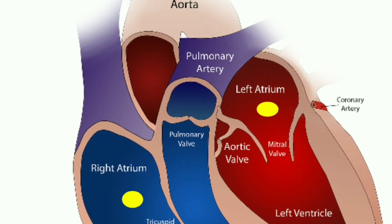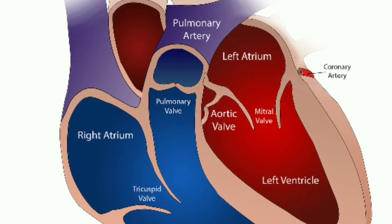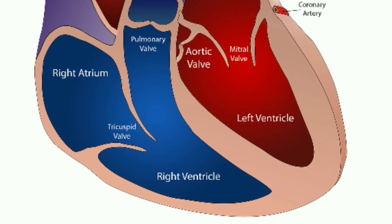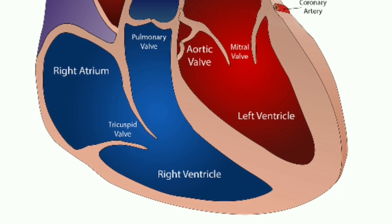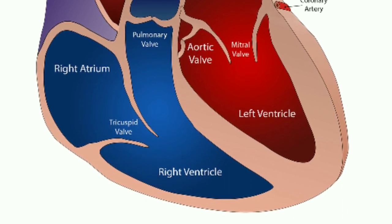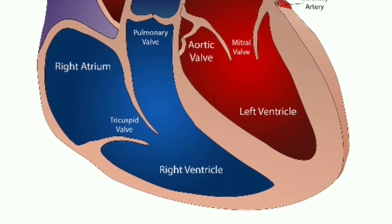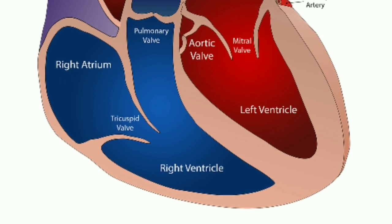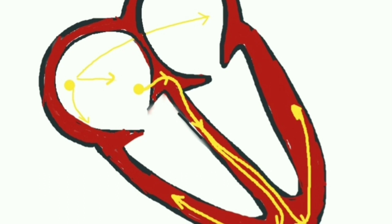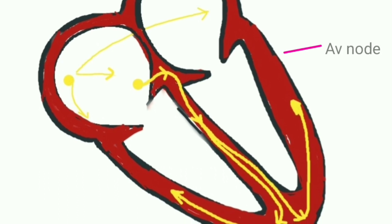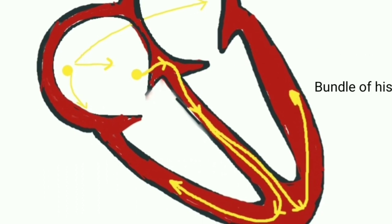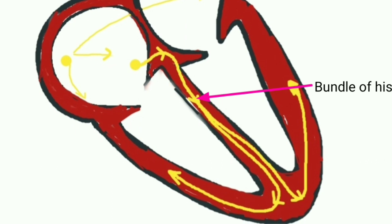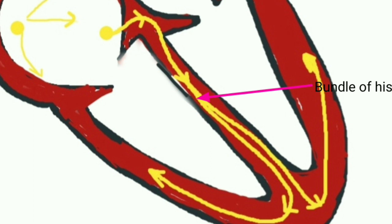Chambers of the heart: right atrium, left atrium, right ventricle, and left ventricle. The upper chambers are called atria — they are thin-walled and serve as receiving chambers. The lower chambers are called ventricles — they are thick-walled and forcefully pump blood out of the heart. The left atria and left ventricles are separated from the right atria and right ventricles by a wall of muscle called the septum. A continuation of the specialized tissue of the AV node, called the bundle of His, descends down the membranous part of the interventricular septum and serves to transmit the electrical impulse from the AV node to the Purkinje fibers of the ventricles.